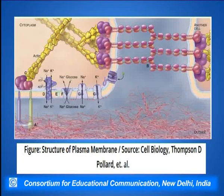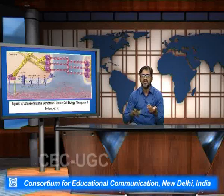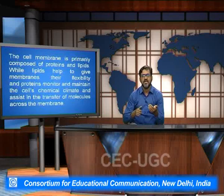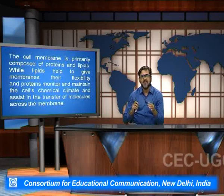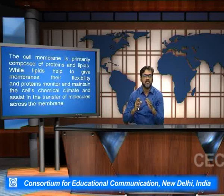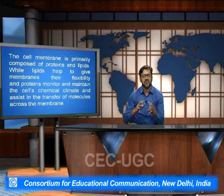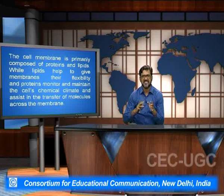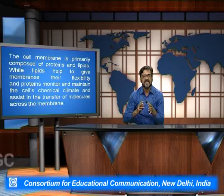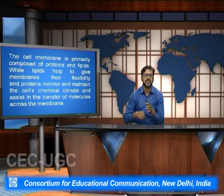The transport from one part of the cell to the other can be uniport, symport, or antiport kind of transmission which takes place within these transporter molecules. The cell membrane is primarily composed of proteins and lipids — lipids help to give the membrane its flexibility, while proteins monitor the cell's climate and assist in the transfer of molecules across the membrane.